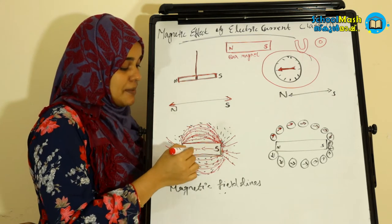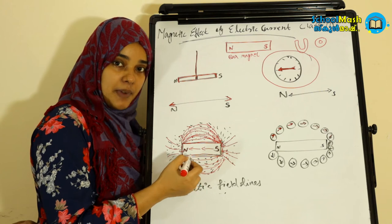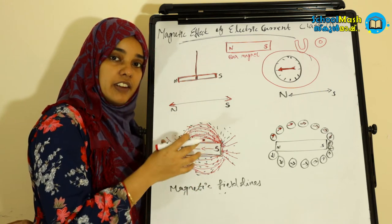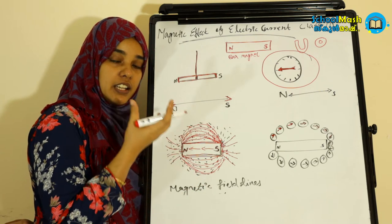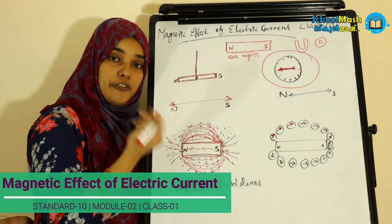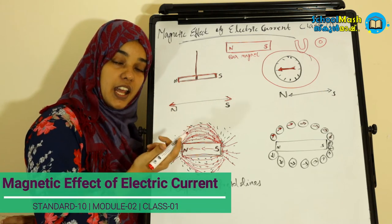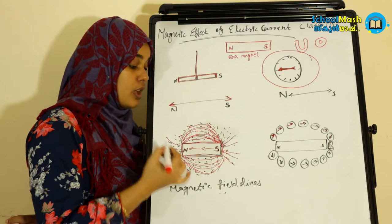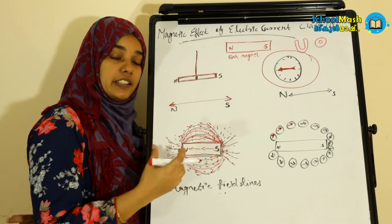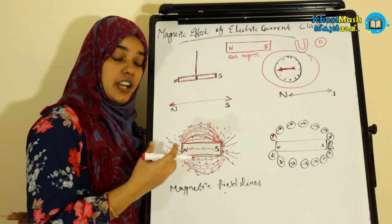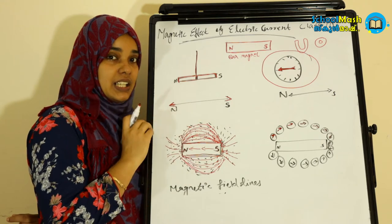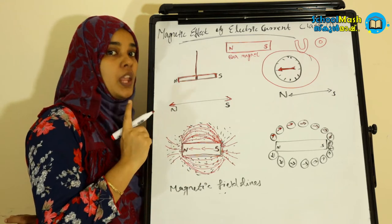The magnetic field lines represent the strength of the magnetic force. If you have a strong magnetic field, the field lines will be very crowded — that is, the field lines are crowded when the field is stronger.